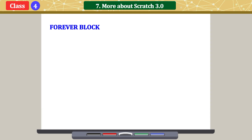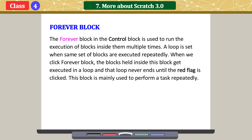Forever block. The forever block in the Control category is used to run the execution of blocks inside it multiple times. A loop is set when the same set of blocks are executed repeatedly. When we click the forever block, the blocks held inside it get executed in a loop, and that loop never ends until the red flag is clicked. This block is mainly used to perform a task repeatedly.